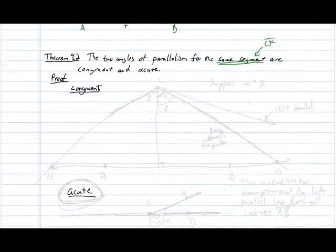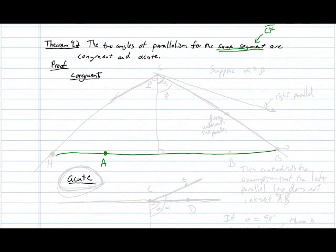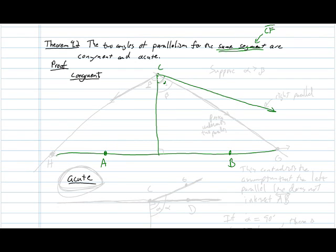For our proof, we have point C and we're going to suppose that we have different angles. We have a right parallel angle — say that's alpha — and a left parallel angle — say that angle is beta. Now suppose that alpha is bigger than beta.